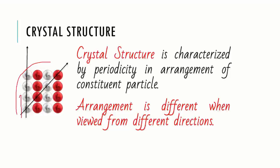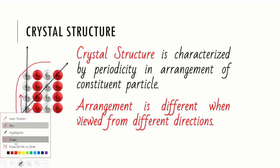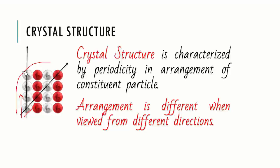Along this direction, all spheres are of same kind. Now let us take another direction. In this direction, the situation is entirely different. Here, a red sphere is followed by a white sphere and the spacing between them is also different.